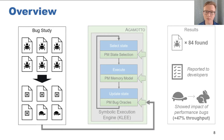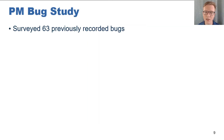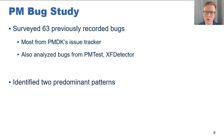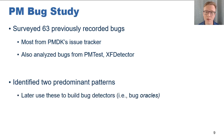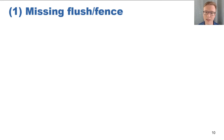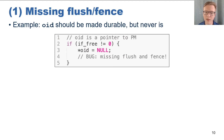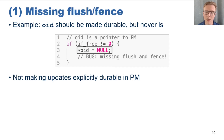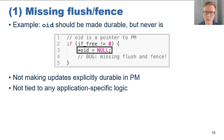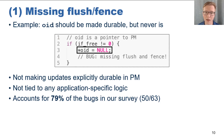First, I'll discuss the results of our bug study. In this survey, we surveyed 63 previously documented bugs. Most of these bugs were from PMDK's Issues Tracker, as that is the most mature open-source persistent memory system available, but we also analyzed some from prior work. We discovered two predominant patterns, which we used to create application-independent bug detectors in Agamotto. The first pattern we codify is the missing flush and fence pattern. In this example, a modification is made to OID, which points to persistent memory, but it is not made properly durable, as there are no associated flushes and fences. This pattern accounts for almost 80% of our surveyed bugs.